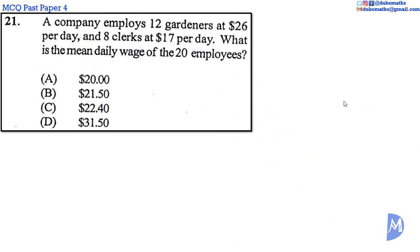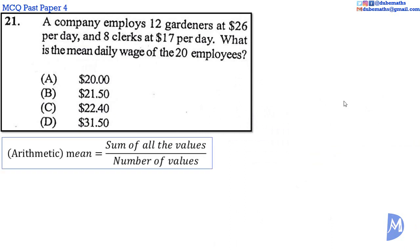Question 21. The mean is equal to the sum of all the values over the number of values. Twelve gardeners make $26 per day and eight clerks make $17 per day.